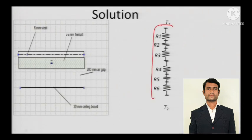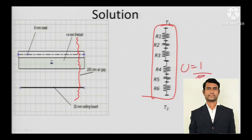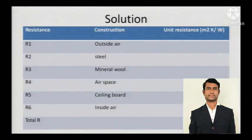We have to take all the resistances in series, because everything is in series — this, then this, then this, and the outside air. All the resistances are in series, and the overall heat transfer coefficient U is equal to 1 by R.